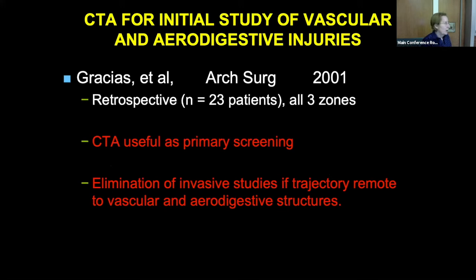Gracias went one step further and looked at CTA as a primary screening tool based on trajectory. This is very helpful — you can eliminate a lot of studies if the trajectory is just remote from everything. If it doesn't go near anything, you're probably fine not doing anything. Maybe observing them, maybe even sending them home.